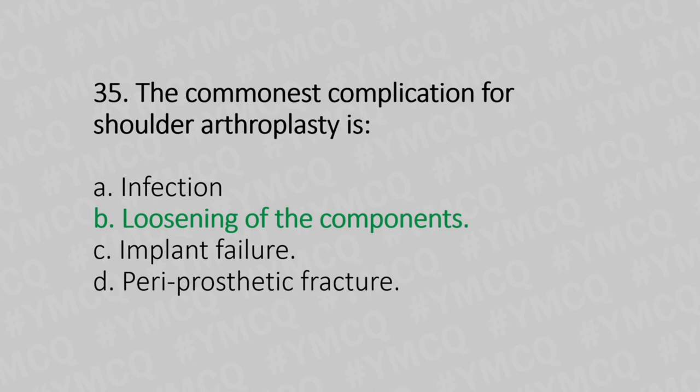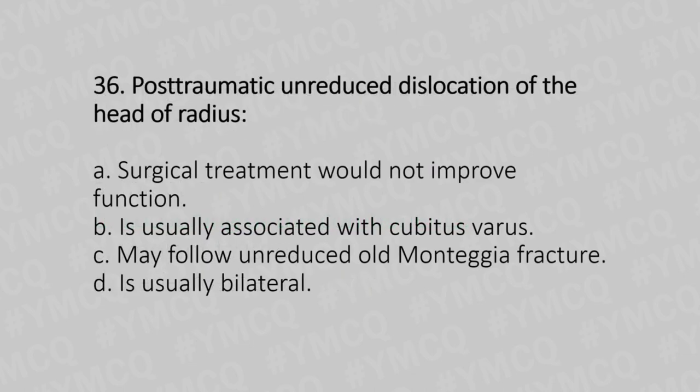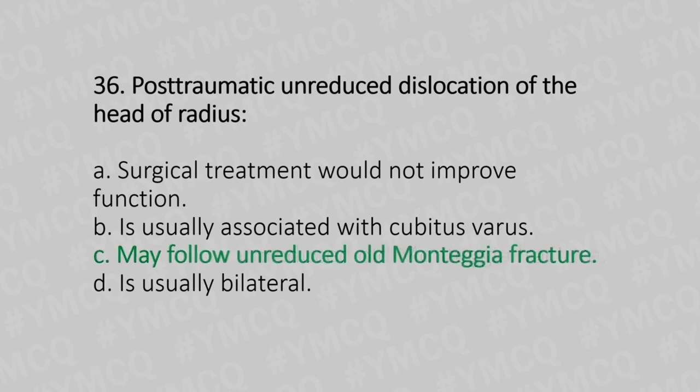Now let's move to question number 36. Post-traumatic unreduced dislocation of the head of the radius. Option A: surgical treatment would not improve the function. Option B: is usually associated with cubitus varus. Option C: may follow unreduced Monteggia fracture. Option D: is usually bilateral. And the answer is Option C, may follow unreduced Monteggia fracture.